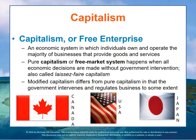Capitalism or free enterprise is an economic system in which individuals own and operate the majority of businesses that provide goods and services. Competition, supply and demand determine which goods and services are produced, how they are produced, and how they are distributed. Some of the countries in this category include Australia, Canada, the United States, and Japan.